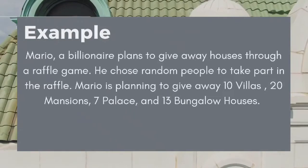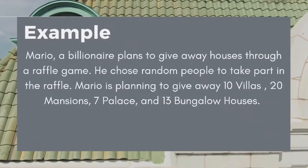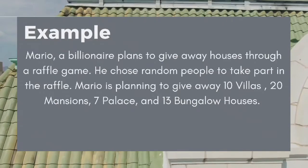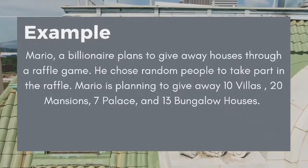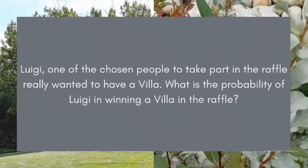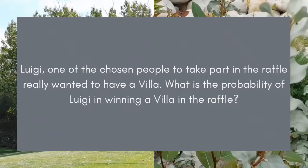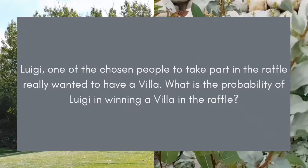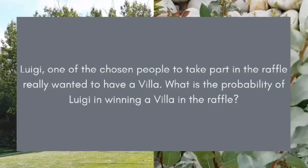For example, Mario, a billionaire, plans to give away houses through a raffle game. He chose random people to take part in the raffle. Mario is planning to give away 10 villas, 20 mansions, 7 palaces, and 13 bungalow houses. Luigi, one of the chosen people, really wanted to have a villa. What is the probability of Luigi winning a villa in the raffle?